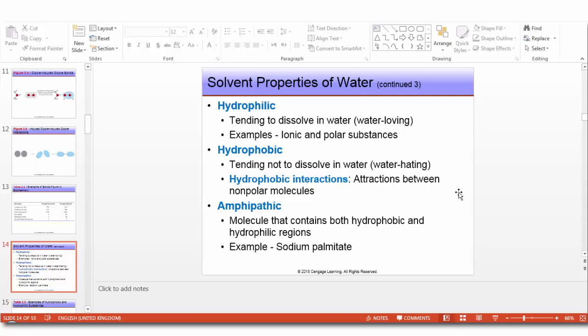Now continuing with solvent properties of water, we have two types of substances, hydrophilic and hydrophobic. Hydrophilic tendency to dissolve in water, water-loving, like ionic and polar substances. Hydrophobic tending not to dissolve in water, or water-hating. Hydrophobic interactions, attraction between non-polar molecules. We also have a third type called amphipathic molecule that contains both hydrophobic and hydrophilic regions, for example sodium palmitate.